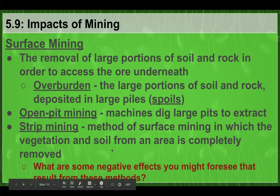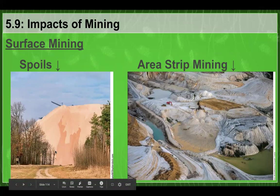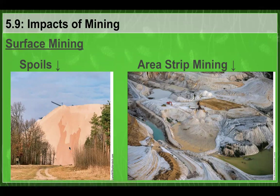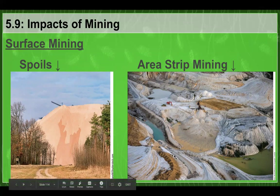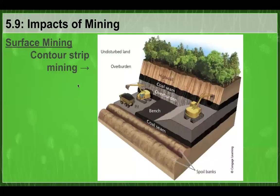Open pit mining is a type of surface mining where machines dig pits to extract ore, like a quarry. Strip mining removes all vegetation and soil from an area to mine the entire location. Contour strip mining involves removal at certain levels of the land — for example, removing a high wall to access a coal seam, then going deeper for more coal. Think about digging these large pits or removing all vegetation from an area — what negative effects can you foresee from each of these methods?